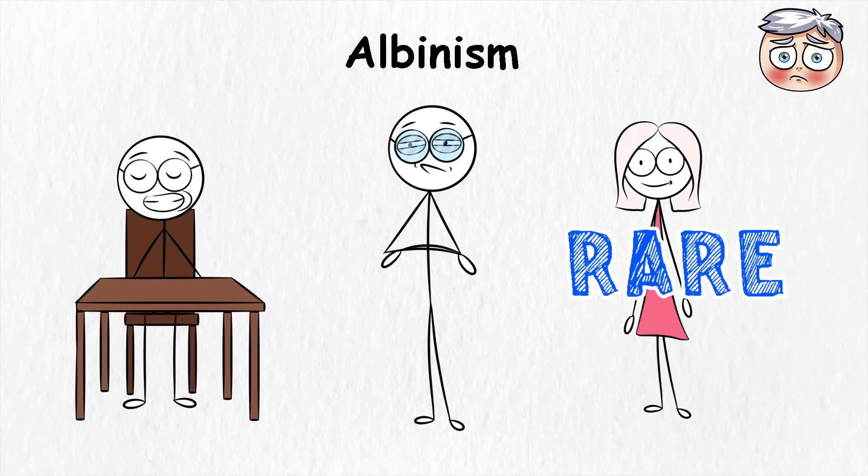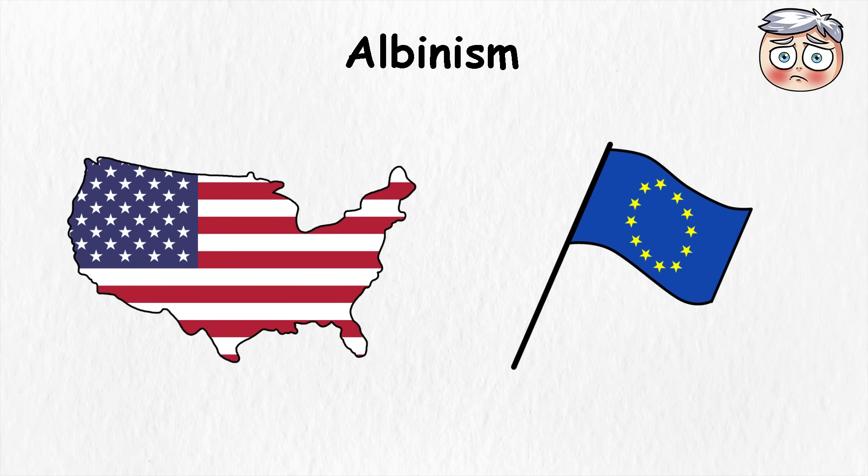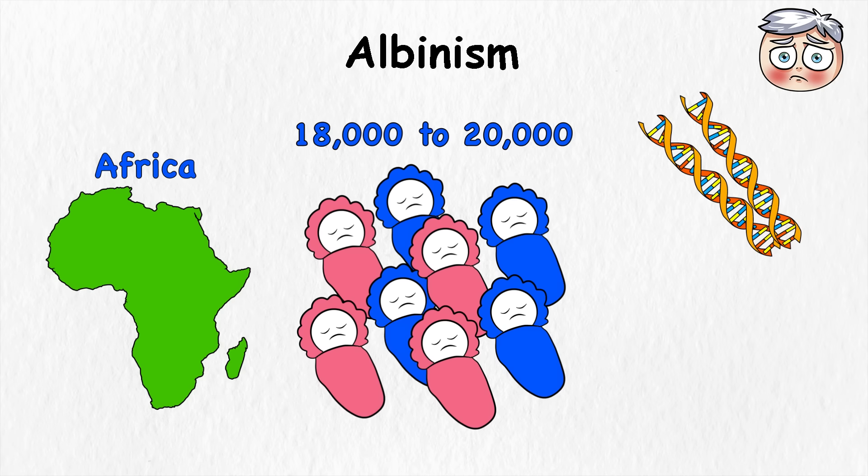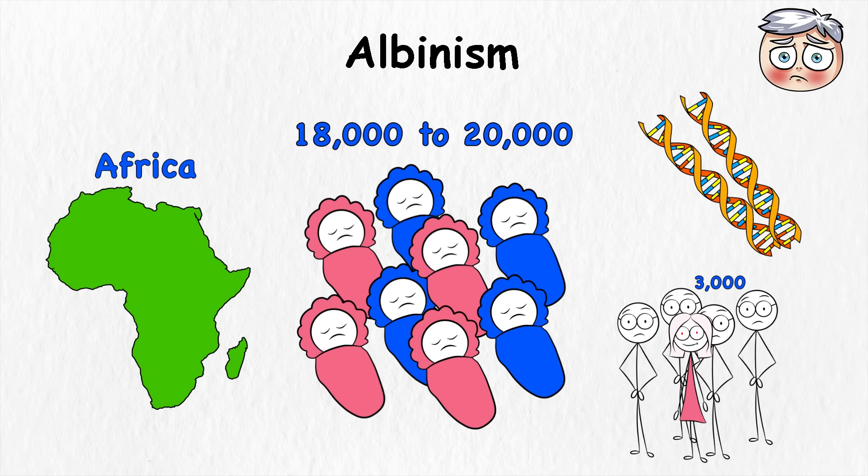Albinism is very rare, but not extremely rare. In the United States and Europe, it shows up in about 1 out of every 18,000 to 20,000 births. In some parts of Africa, where the genetics are different, it can be as common as 1 in 3,000.